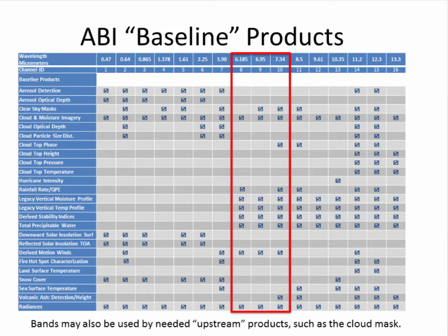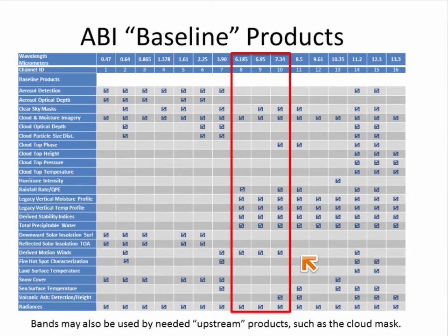Remember that for any set of ABI bands, there are qualitative and quantitative applications. We've looked at a variety of qualitative applications in this training module through imagery interpretation. Examples of quantitative applications include derived products and assimilation into NWP models. The ABI baseline products are derived products that make quantitative use of various bands, and in later training modules you'll be learning about these ABI baseline products. In this table, we can see the list of all ABI baseline products and the ABI bands that go into producing them. The three water vapor channels are highlighted in red to give an appreciation for the various products that make use of these bands — for example, derived motion winds use data from the water vapor bands. Some bands may also be used by upstream products such as the cloud mask.